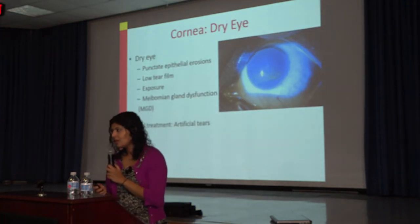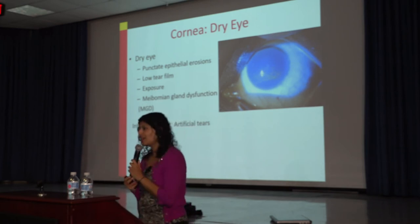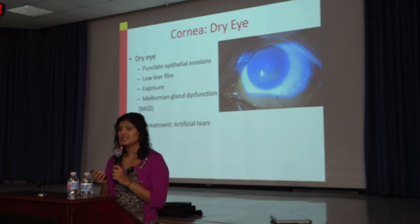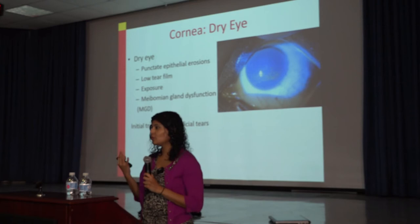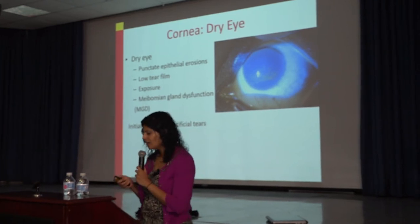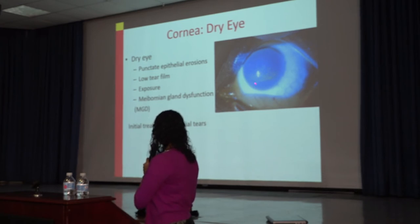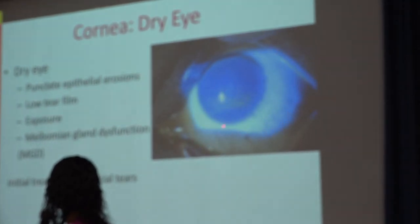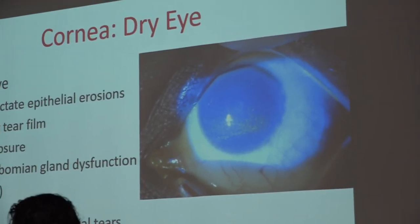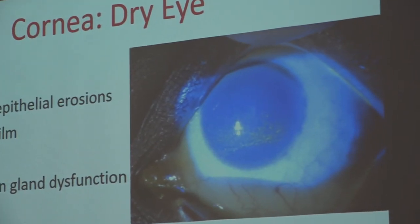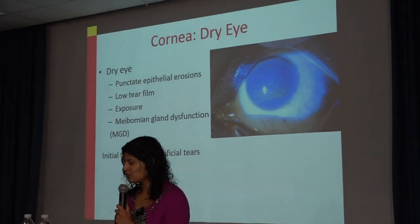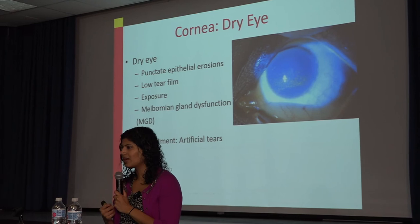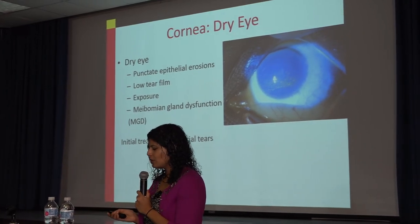Dry eyes — almost everyone in this room has some symptoms. It's due to the environment we live in and the devices we use: tablets, computers. We're not blinking enough. When eyes are dry, it causes punctate erosions in the surface of the cornea, visible in the central area. These patients should be counseled to take breaks from screen work every 30 to 60 minutes, and initial treatment is artificial tears.